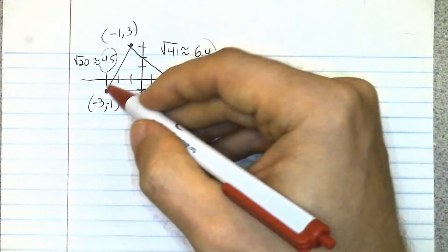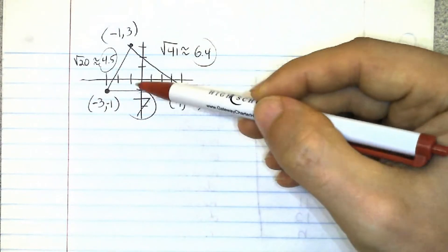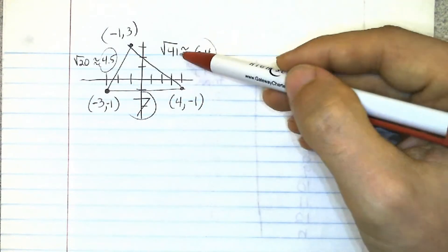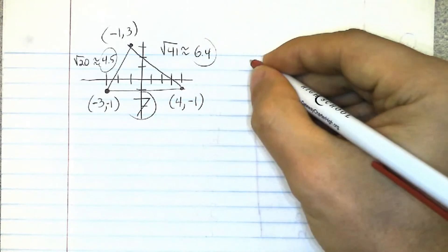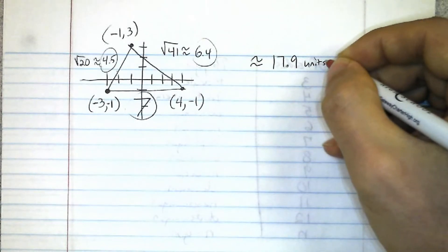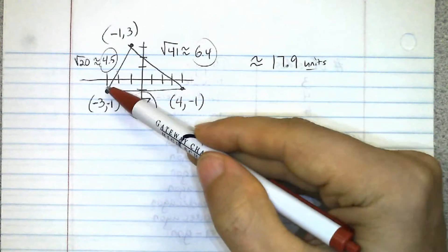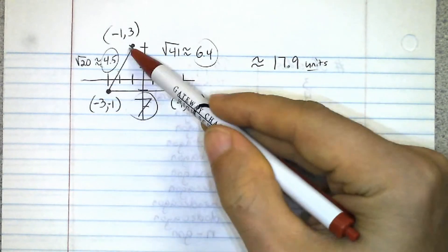So to find the perimeter we would add 7 plus square root 20 plus square root 41. We would end up with about 17.9 units. Notice I'm saying units, not inches, yards, meters, etc.